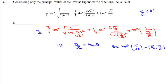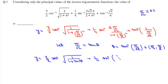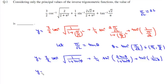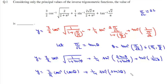Substituting tan θ into the expression y, we get: y = (3/2) cos⁻¹(√(1/(1 + tan²θ))) + (1/4) sin⁻¹(2tanθ/(1 + tan²θ)) + tan⁻¹(1/tanθ). Since 1 + tan²θ = sec²θ, √(sec²θ) = sec θ, so cos⁻¹(1/sec θ) = cos⁻¹(cos θ). Also, 2tanθ/(1 + tan²θ) = sin 2θ, and 1/tan θ = cot θ, giving tan⁻¹(cot θ).